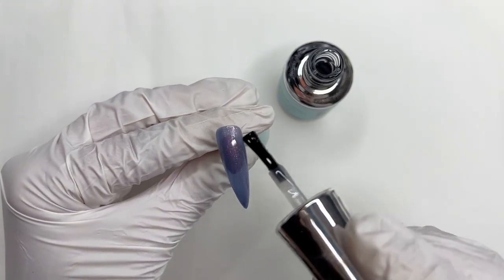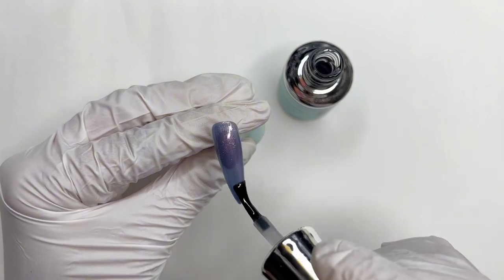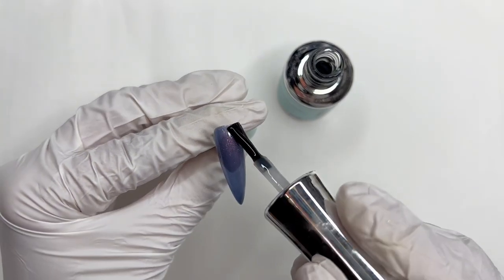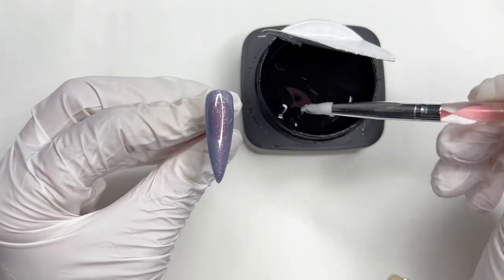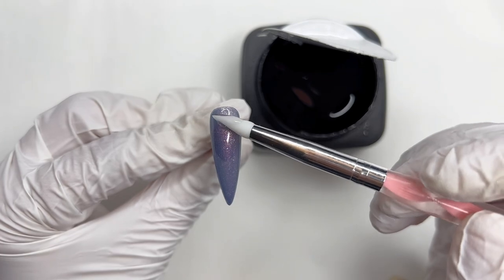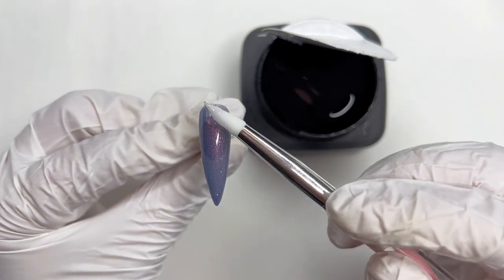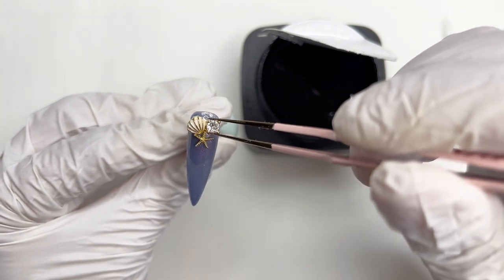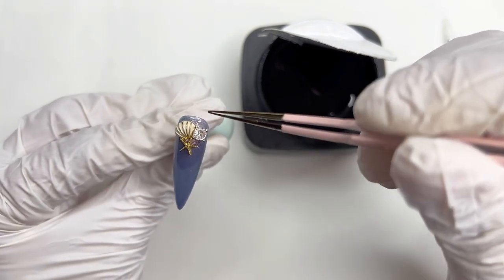The reason I'm adding top coat right now is because I want to buff on some chrome powder later. After curing under the lamp, now I'm using Jimbi's Crazy Top Thick Gel and I'm adding some to the top of the nail so that I can secure on a seashell charm. I got this charm off of AliExpress.